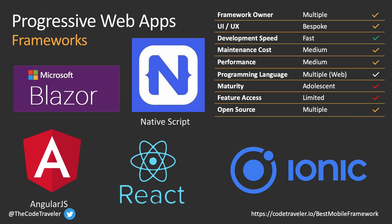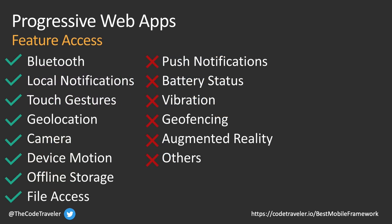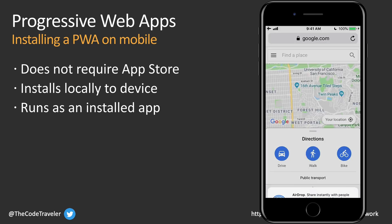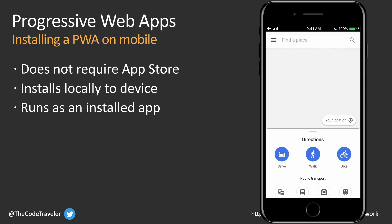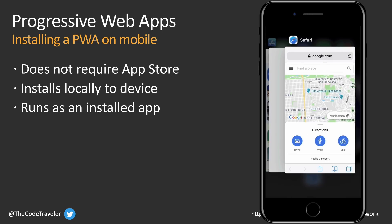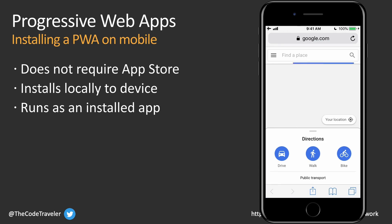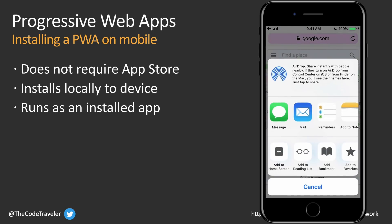One of the biggest downsides to PWAs is feature access. PWAs cannot access every feature or API available in a mobile app. They can access features like Bluetooth and geolocation, but not others like vibration, geofencing, and augmented reality. One big benefit, however, is that you can install a PWA from a website — navigate to the site in your browser, tap 'add to home screen,' and the app will appear and run like a native mobile app. This allows us to get new features to users more quickly and ensures all users stay up to date, bypassing the app store.